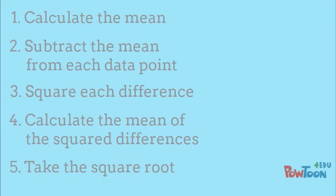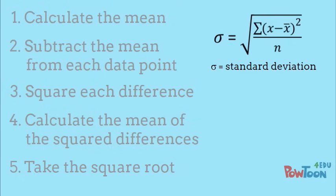Using symbols, the equation for calculating standard deviation looks like this. Lowercase sigma stands for standard deviation of a population. Uppercase sigma tells us to calculate the sum for each instance. X is each data point, x-bar is the mean of the data points, and N is the number of data points.